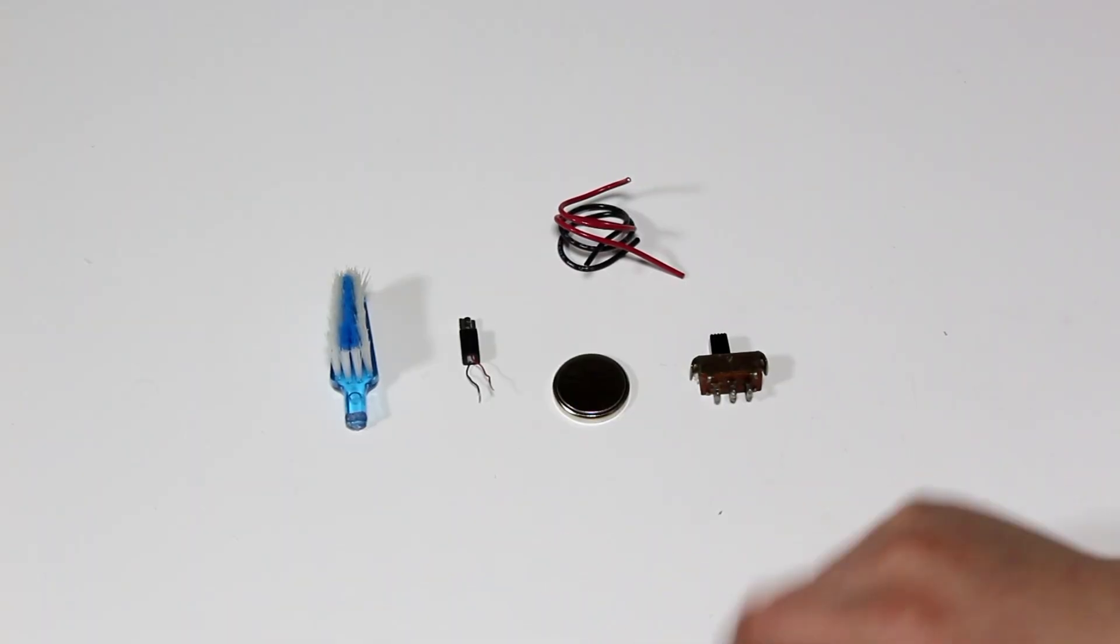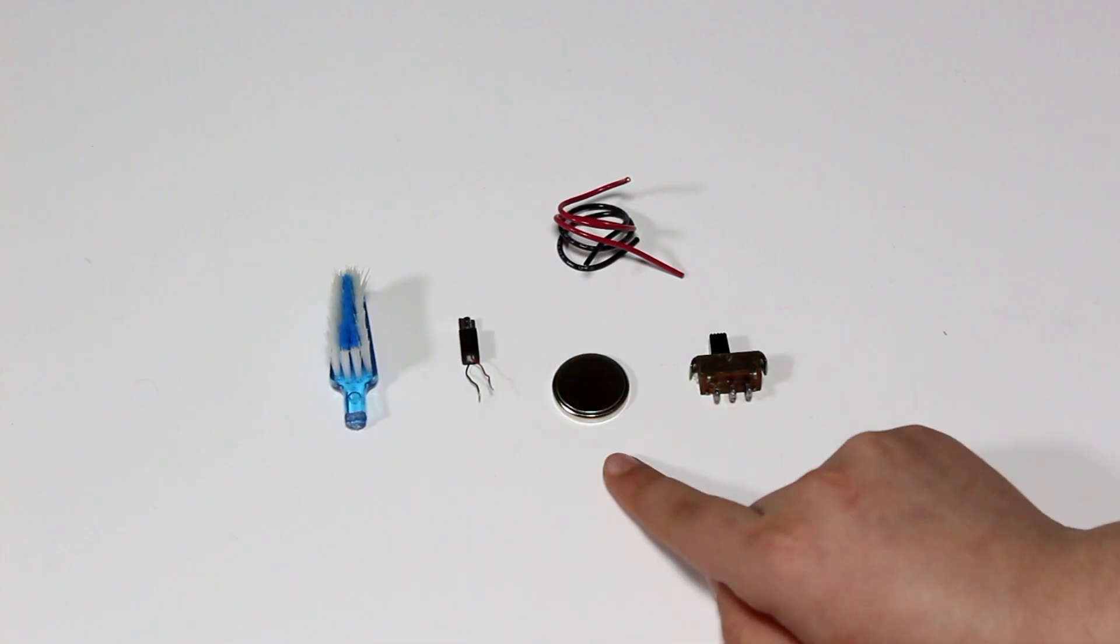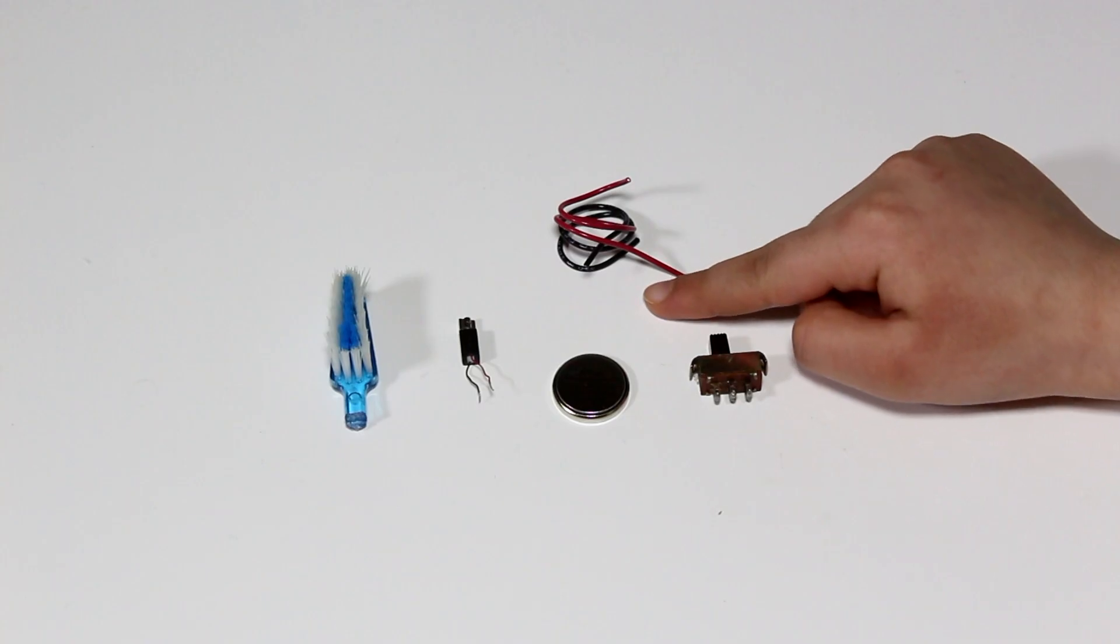This is what you need: a toothbrush, a cell phone vibrator, a coin cell battery, a switch, and some wires.